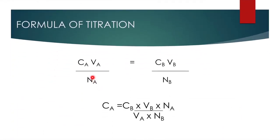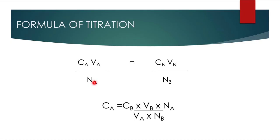The formula of titration looks like this: C-A multiplied by V-A divided by N-A equals C-B multiplied by V-B divided by N-B, where C-A is the concentration of acid, V-A is the volume of acid, N-A is the moles of acid, and N-B is the number of moles of base. I can rearrange this formula according to my needs. If C-A is unknown, I can find C-A. If C-B is unknown, I can find C-B with the help of this formula.